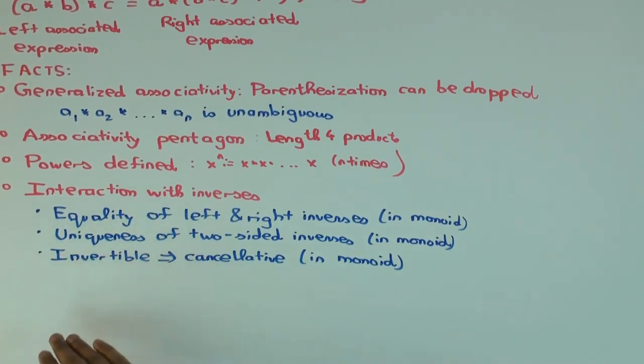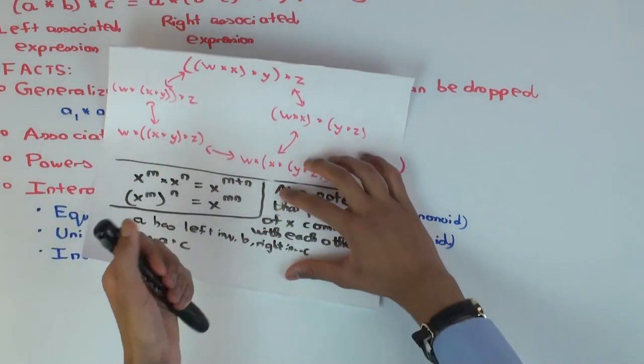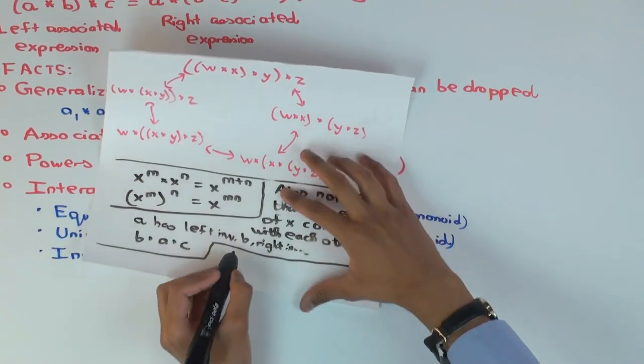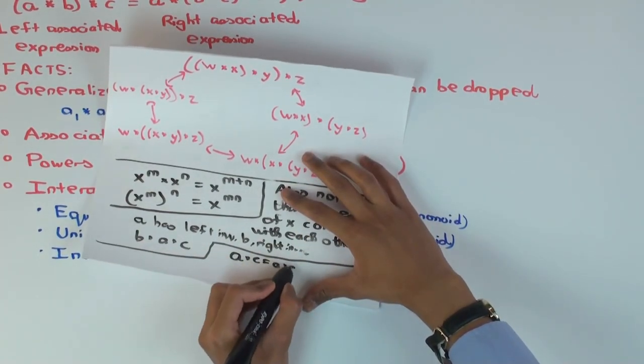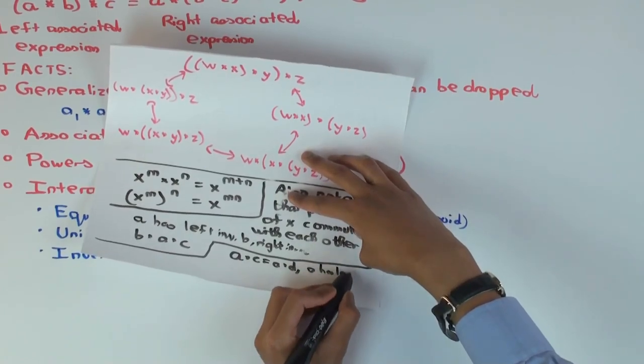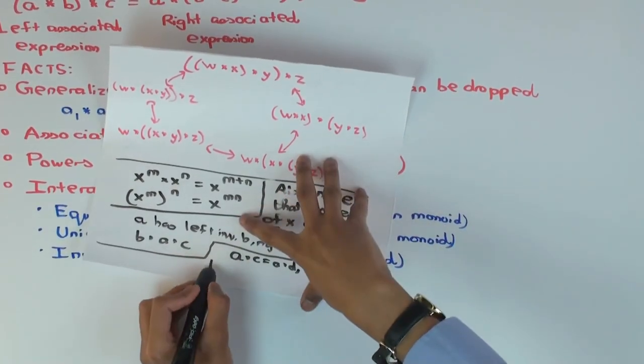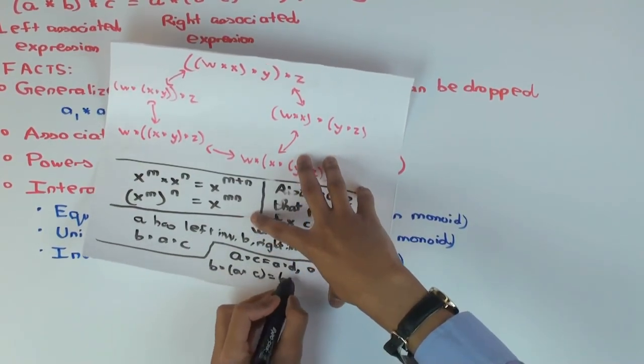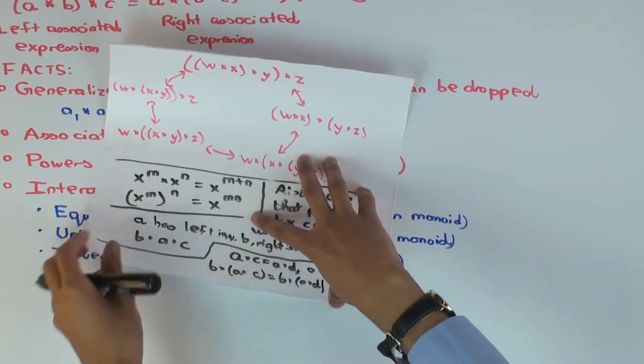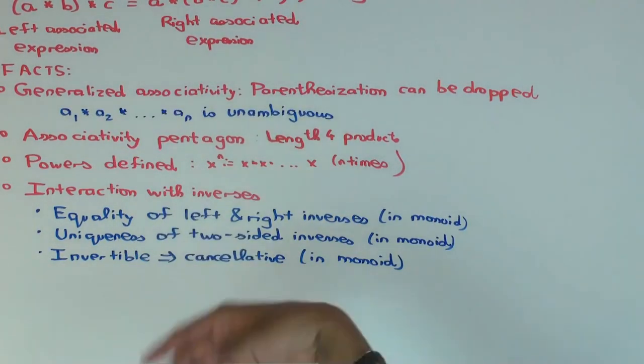You take your element multiply on the left by the left inverse and on the right by the right inverse and then you take that triple product and associate that. Just say a has left inverse b, right inverse c, you consider b star a star c, associate both ways, simplify and you'll get b equals c. And this equality of left and right inverses also gives uniqueness of two-sided inverses. If an element has a two-sided inverse then it cannot have any other two-sided inverse. There's at most one two-sided inverse.